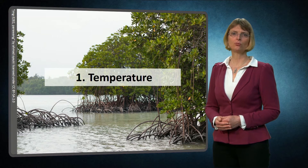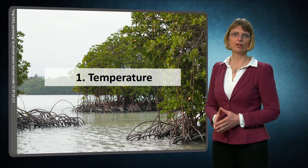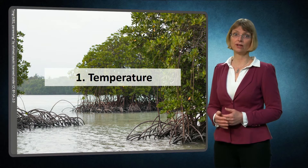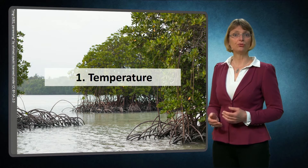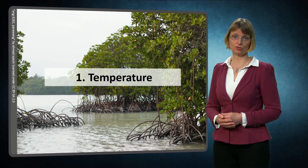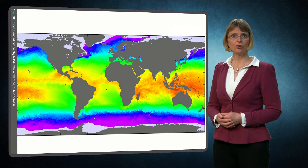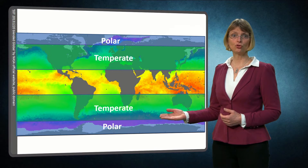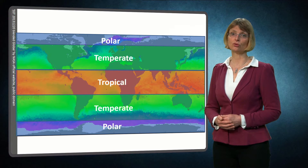If we take a very large spatial scale, the first factor that determines ecosystem development is temperature. For example, most mangrove species do not tolerate temperatures below zero degrees Celsius, and reef building corals can't tolerate water temperatures below 18 degrees Celsius. We can roughly distinguish three climatic zones: a polar zone, a temperate zone and a tropical zone, each zone having its own characteristic ecosystems.